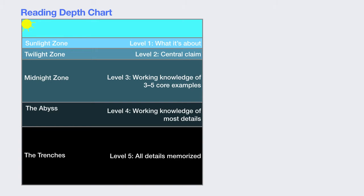Level five is the life-or-death, very serious level of reading. I like this chart because it dramatizes the process of reading depth and shows you that you should hang out in certain zones and maybe not others. If you get down into the trenches, it gets more and more dangerous — and we don't always need to go for the trenches.